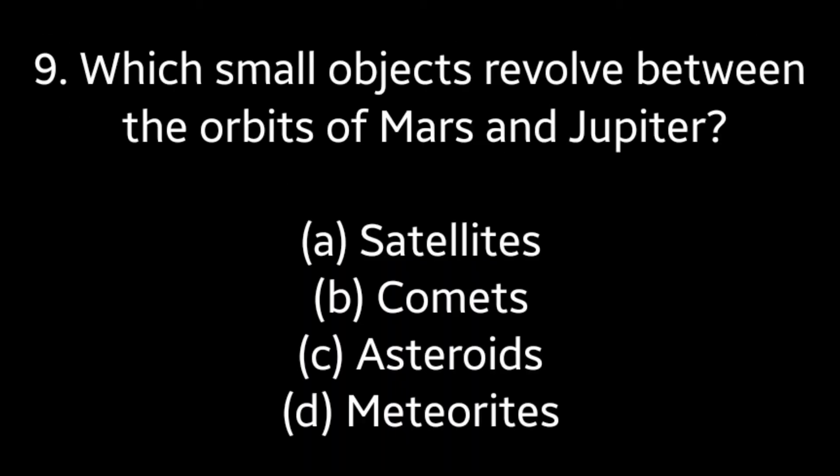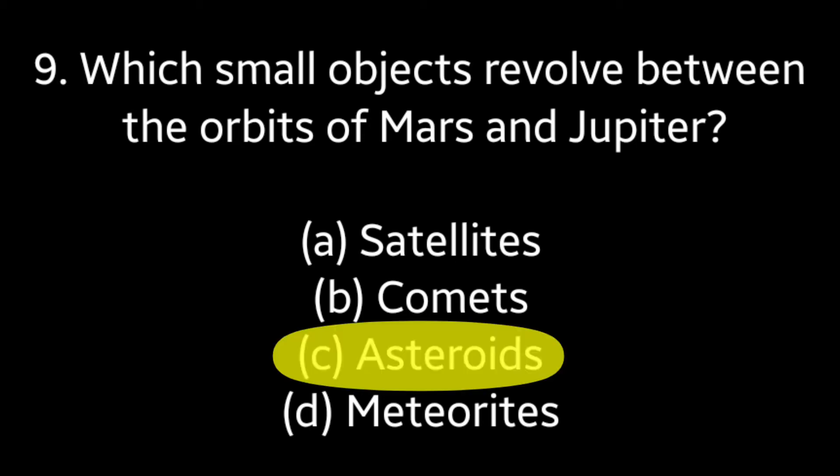Question number 9: Which small objects revolve between the orbits of Mars and Jupiter? Options: Satellites, Comets, Asteroids, Meteorites. Answer is option C — Asteroids.